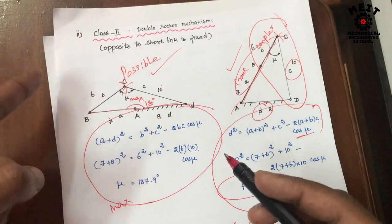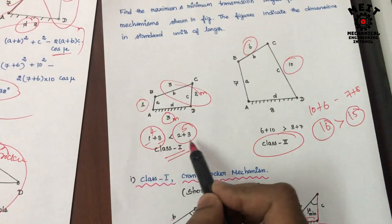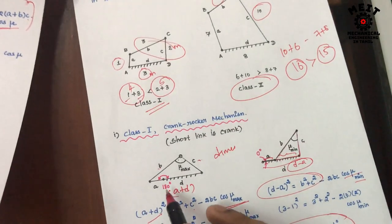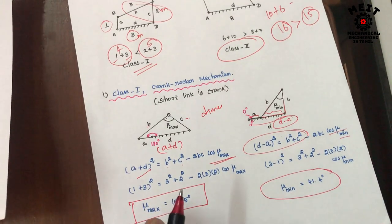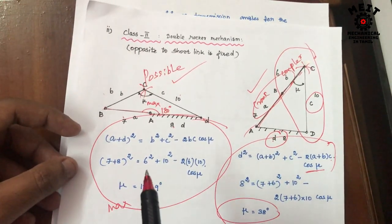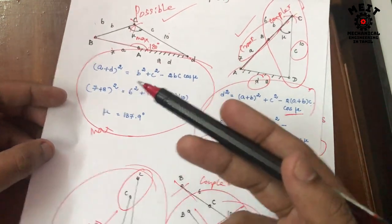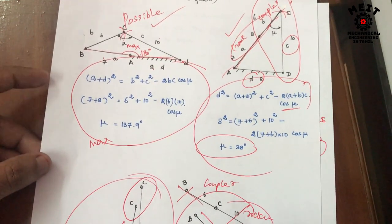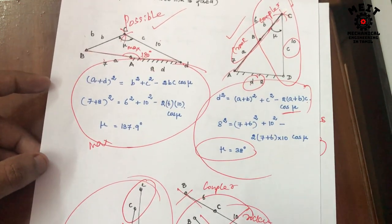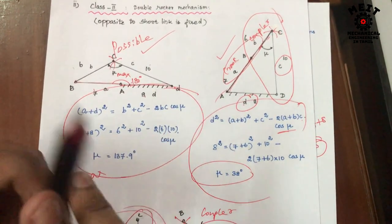We must also try the fourth diagram: making the coupler and rocker in a straight line. If that is not possible for the given dimensions, we conclude that among the four diagrams, exactly two will be possible and two will not. We identify which two are possible, draw them to scale, apply the cosine law, and calculate the maximum and minimum transmission angle values. Thank you for watching.